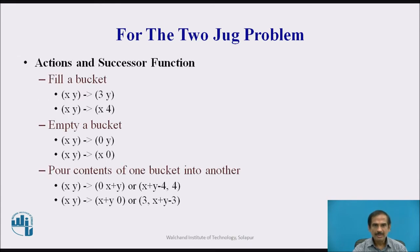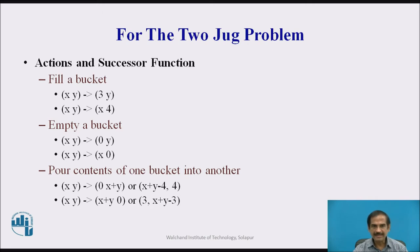For the two-jug problem there are various actions that are intermediate steps. The action and successor functions include: filling a bucket — where x is the first bucket and y is the second — so x may be 3 (first bucket has 3 gallons) and y may be 4 (second bucket has 4 gallons). You may also empty a bucket, giving x = 0 or y = 0. Similarly, you pour the contents of one bucket into the other by adding and subtracting values of x and y.